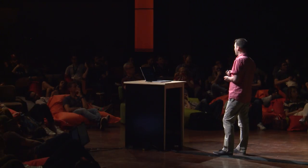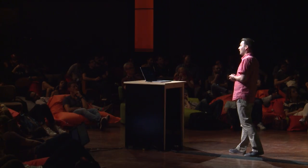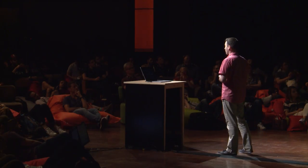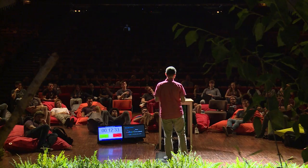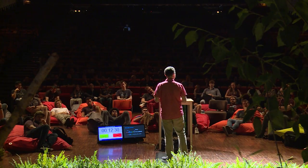A couple years ago when we designed this pipeline, we came up with this convention. Most topics start with the environment — something like production, testing, staging. Then we have a source, which is the producer of data, usually a service. Then we have a title — a unique game ID, which literally means something like Call of Duty World 2 on PlayStation Network. Then we have a category of data and the protocol version. As an example, you can see a topic with telemetry match events, or match summaries — when an online match is finished, we generate this event with player information, various statistics like kills, shots, and so on.